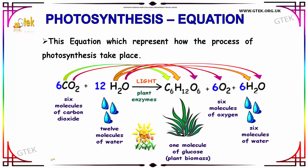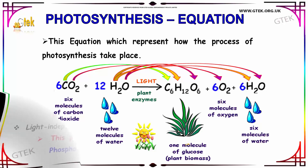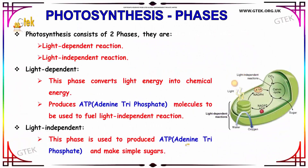This equation represents how the process of photosynthesis takes place. Now we are going to see about the phases of photosynthesis. Photosynthesis consists of two phases: light-dependent reaction and light-independent reaction. Here the light-dependent reaction is carried out, and here the light-independent reaction is carried out.